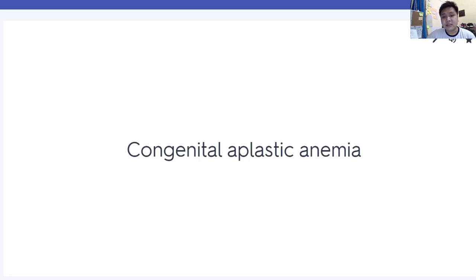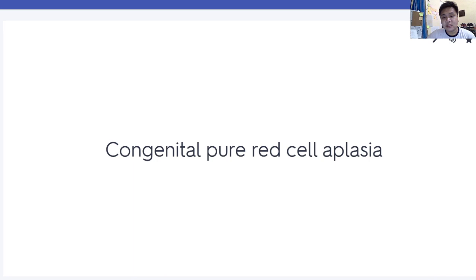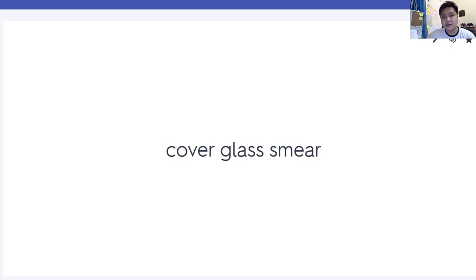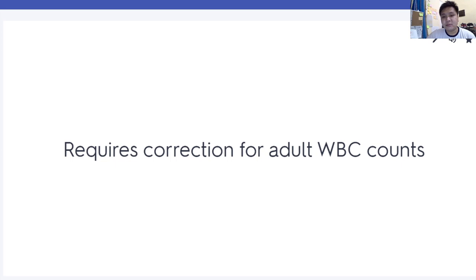Fanconi's anemia is a form of congenital aplastic anemia. Diamond-Blackfan is congenital pure red cell aplasia. The Ehrlich technique uses a cover glass to prepare your smear. Greater than 5 nucleated RBCs per 100 WBCs requires correction for your adult WBC count — please review the formula for WBC correction.